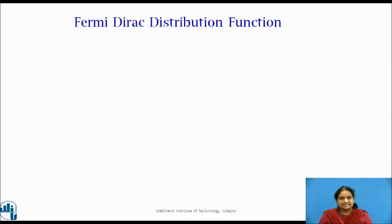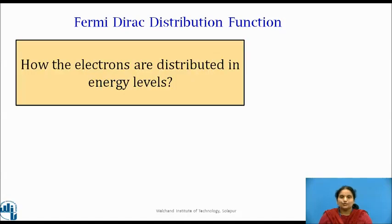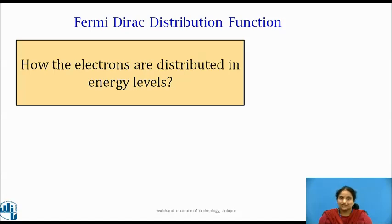We are next interested in knowing how the electrons are distributed among the various energy levels in the conduction band at a given temperature. We cannot apply Maxwell-Boltzmann distribution to electrons because they obey the exclusion principle and also they are indistinguishable particles.